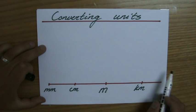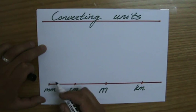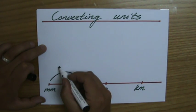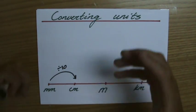go either that direction or this direction. If I go from a small unit to a bigger unit, from millimeters to centimeters, I would have to divide by 10. There are 10 millimeters in a centimeter, there are 10